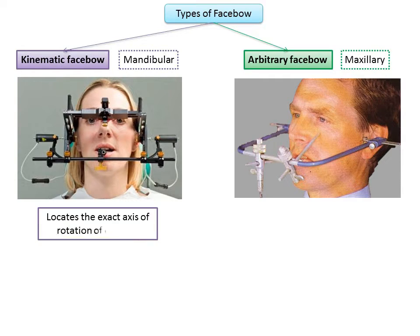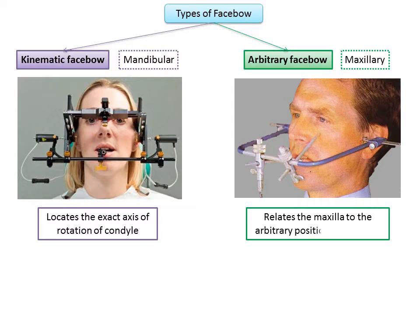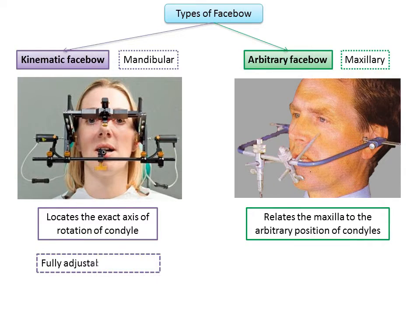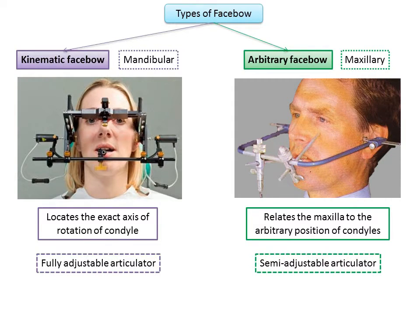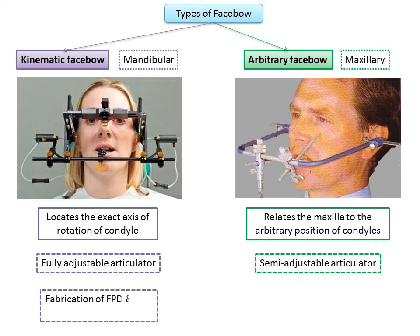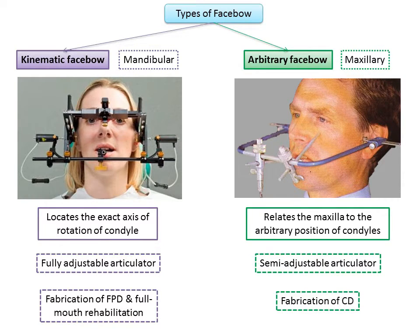Kinematic facebow locates the exact axis of rotation of the condyle, so it is more specific but more time-consuming. Arbitrary facebow relates the maxilla to the arbitrary position of condyles, so it is dependent on anatomic averages. Kinematic facebow is used with a fully adjustable articulator, whereas arbitrary facebow is used with a semi-adjustable articulator. Kinematic facebow is quite cumbersome, though it gives specific results, and is used for fabrication of fixed partial dentures or full mouth rehabilitation.